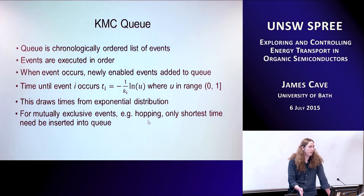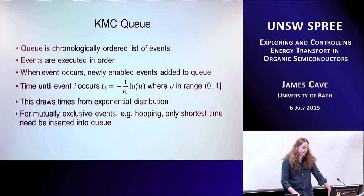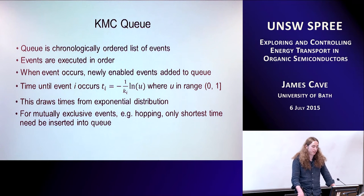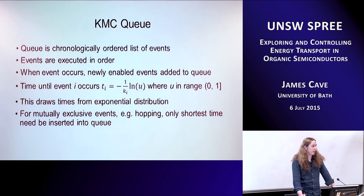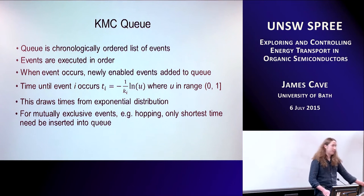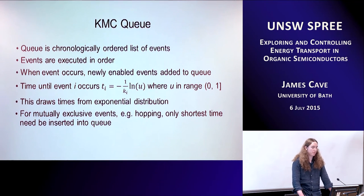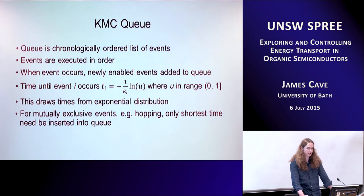How does KMC work? We maintain a queue where all events are ordered by how quickly they will happen. That's why it's called the First Reaction Method — we go through the queue and execute each event in order. Whenever anything happens, we update the queue. For example, if an exciton hops, we have to update its possible new hops. We generate times for each event using t = -ln(u)/rate, where u is a uniform random number. The -ln(u) is the inverse CDF of the exponential distribution, since we model all events as Poissonian.